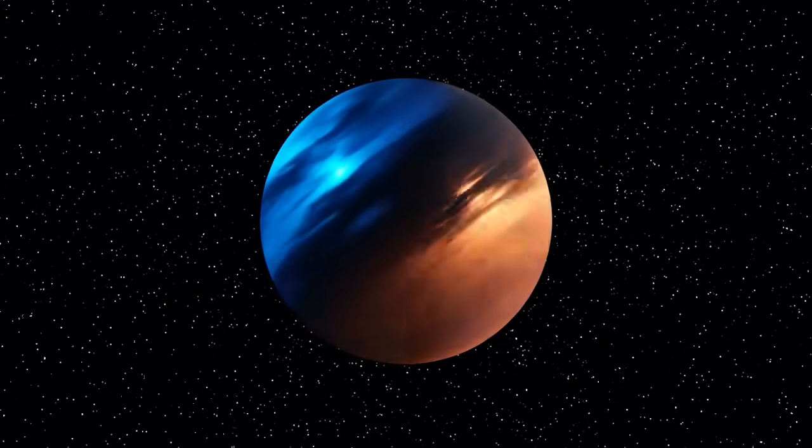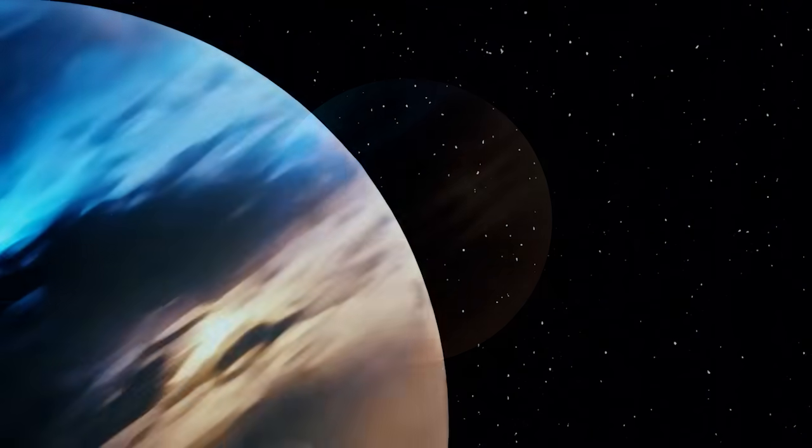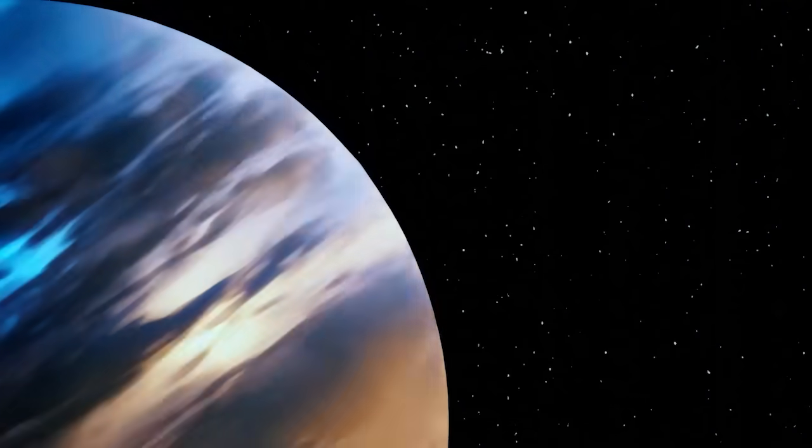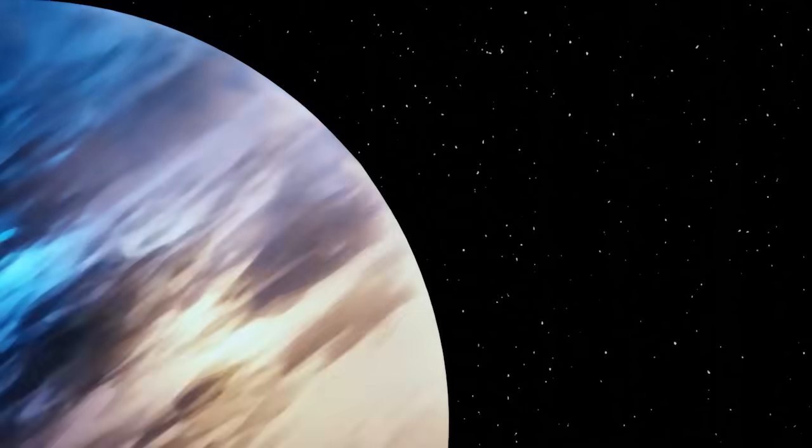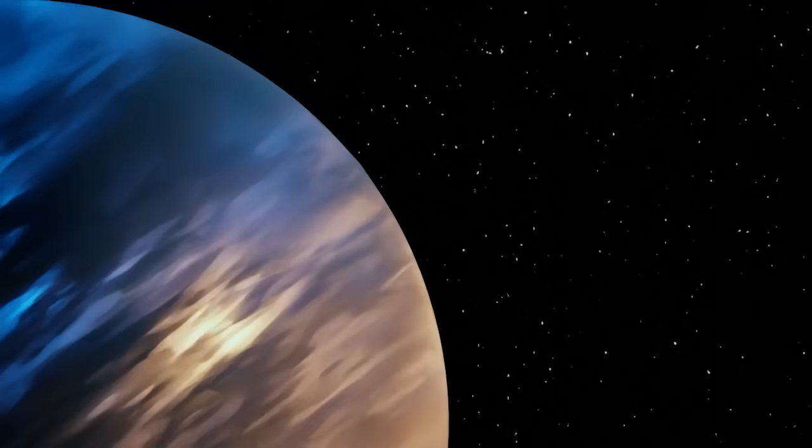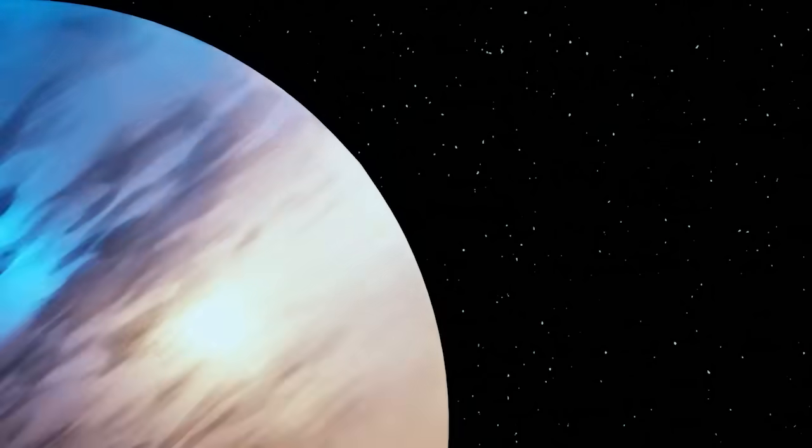James Webb was able to note other particularities of this exoplanet. The clouds of its atmosphere would be in pieces rather than in uniform coverage, and the atmosphere contains neither methane nor hydrogen. It does contain sodium and potassium, and water vapor.